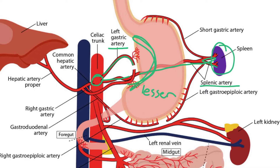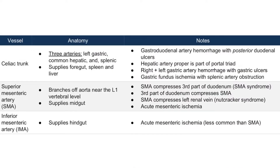Specifically, the left gastric artery supplies the lesser curvature. Going back to the table, we've identified these three main branches: the left gastric artery, the common hepatic artery, and the splenic artery. The celiac trunk supplies the foregut and the spleen via the splenic artery, and the liver via the hepatic artery proper — a branch of the common hepatic artery. The hepatic artery proper forms part of the portal triad within the liver, and a high-yield pearl is that the gastroduodenal artery can hemorrhage with posterior duodenal ulcers.